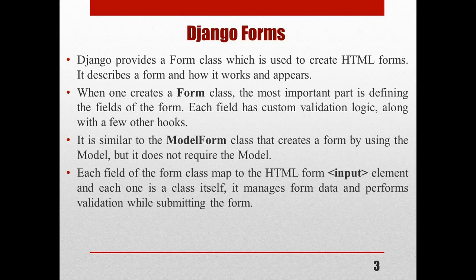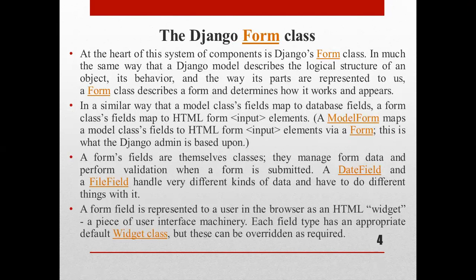Each field of the form class maps to the HTML form input elements, and each one is a class itself. It manages form data and performs validation while submitting the form. The heart of the system is Django's form class, in much the same way that the Django model describes the logical structure of an object, its behavior, and the way it's parts are represented. A form class describes a form and determines how it works and appears.